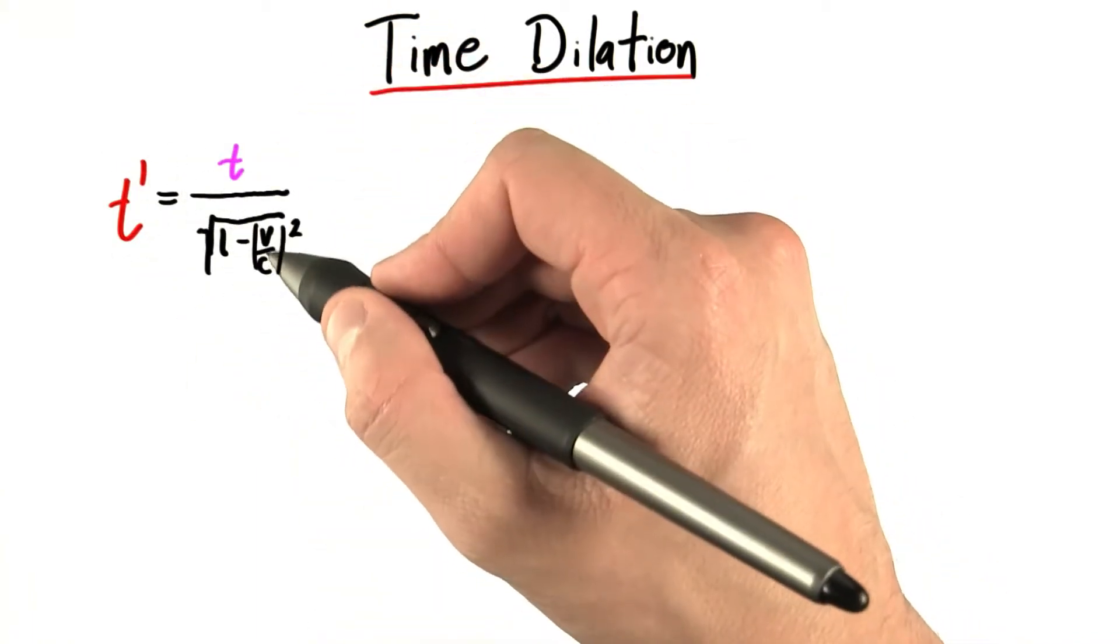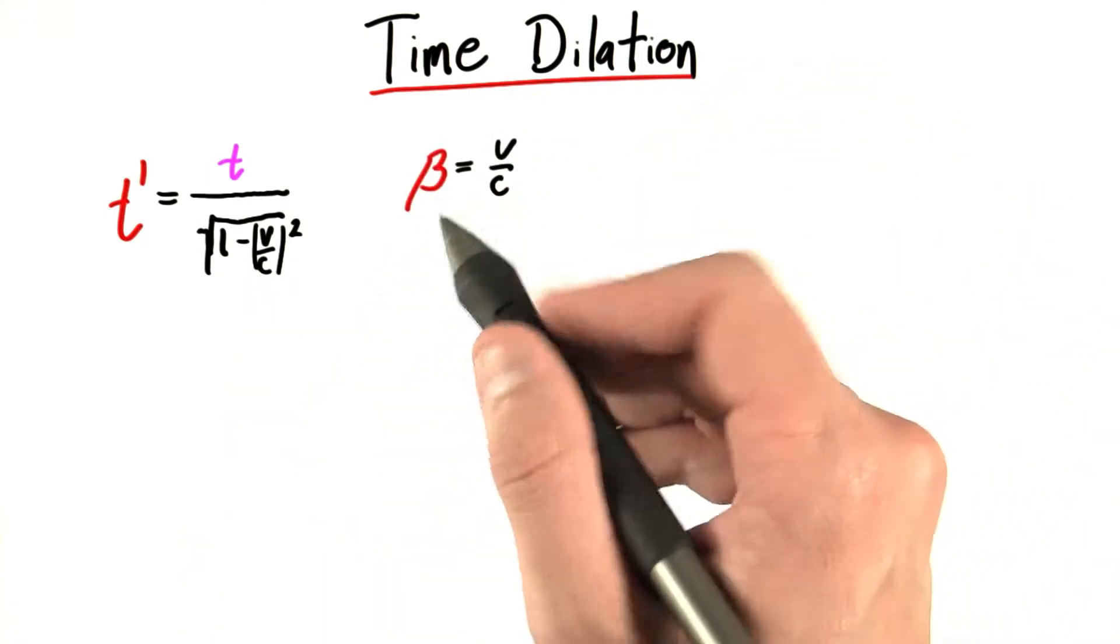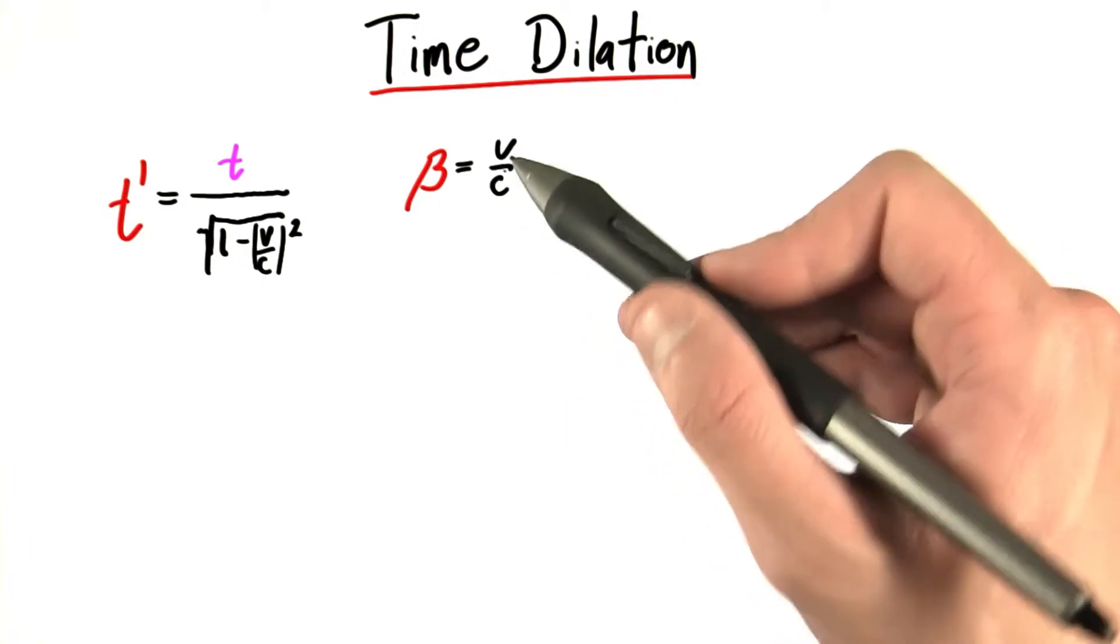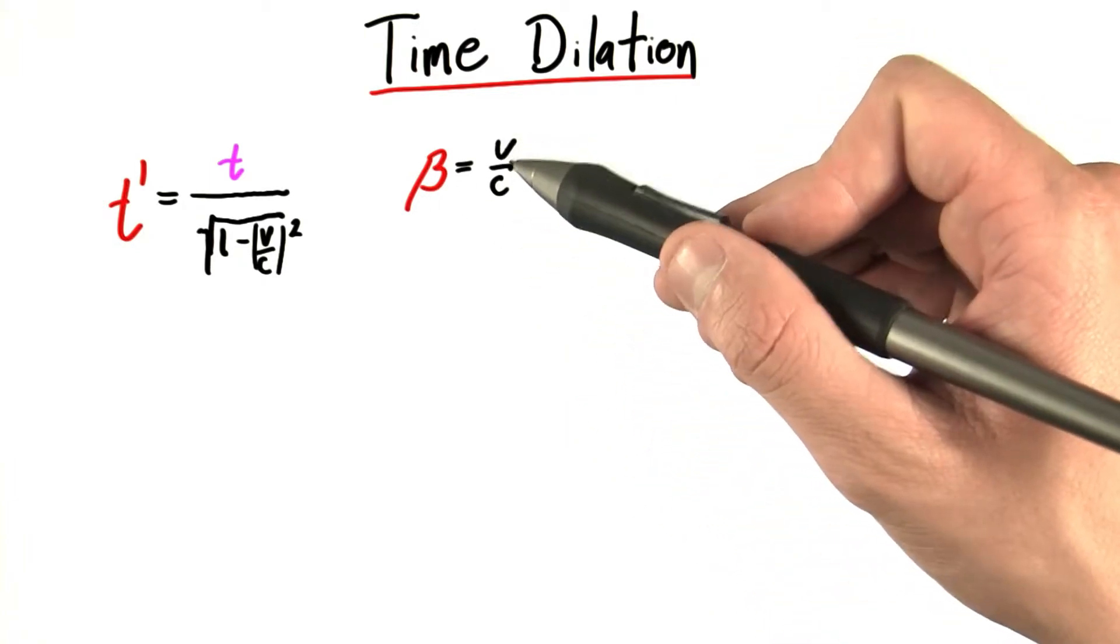Actually, this number v over c, I want to stop writing v over c. Instead, I'm going to use this number or variable beta to represent the ratio of a frame speed to the speed of light.